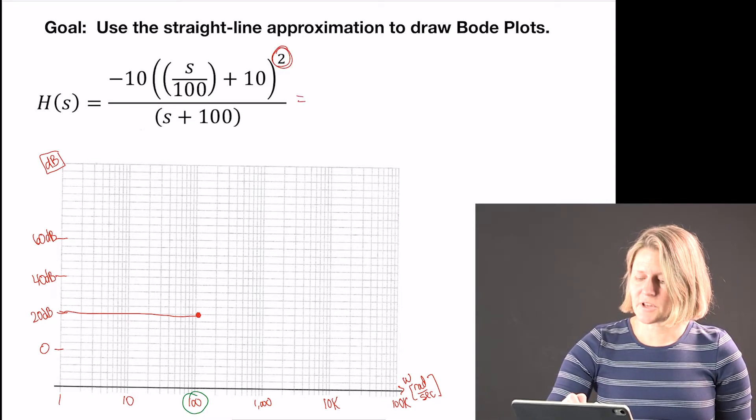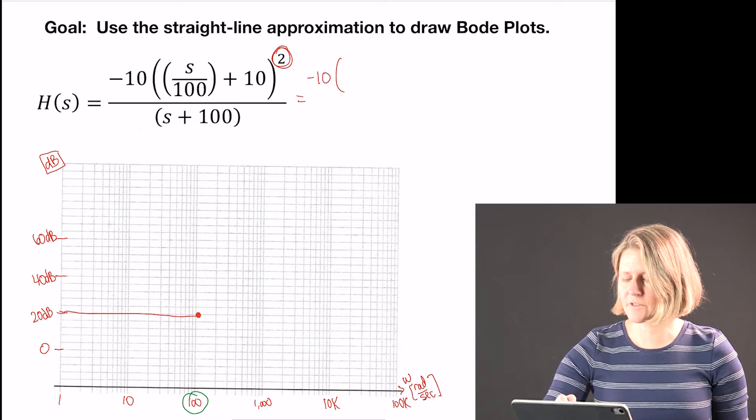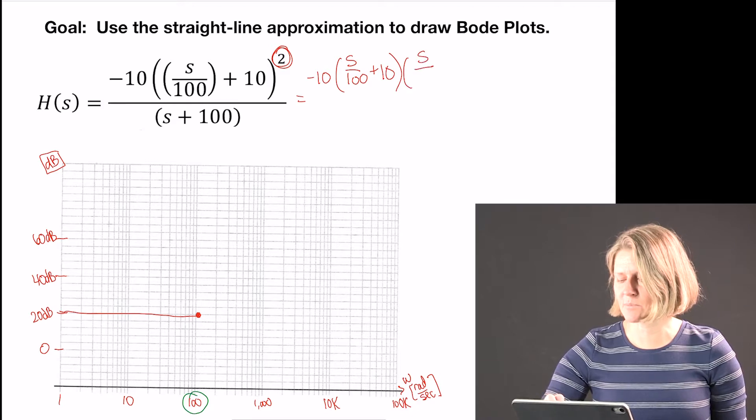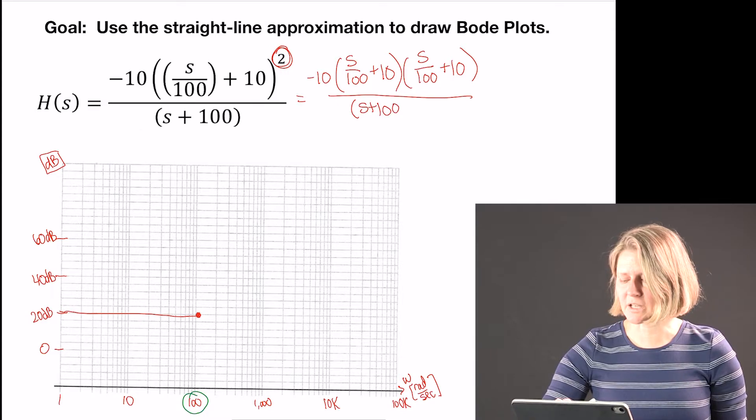I notice that there is a squared here, so that means there are going to be two of these quantities. I could rewrite that and this would be the same equation because that square means that those are just multiplied out.